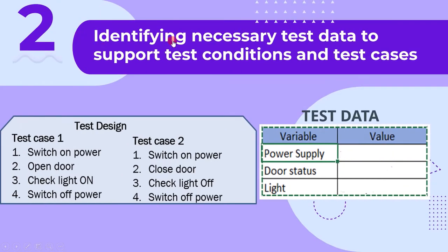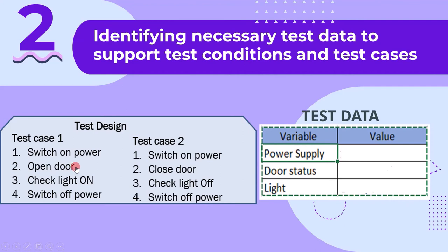The second activity is identifying necessary test data to support test conditions and test cases. During test design, we write high-level test cases, but if you look carefully, we need more information to test a feature. For example, the value of the power supply — we cannot give any random voltage. When we say 'open the door,' what shall be the value of the signal? Similarly, when we say 'check light on,' what shall be the value of the signal? These are all called test data. In the test design stage, we just have to identify these test data. Test data contains input data which a test case needs, and it is empty at this stage because in the test design stage we only identify the test data.